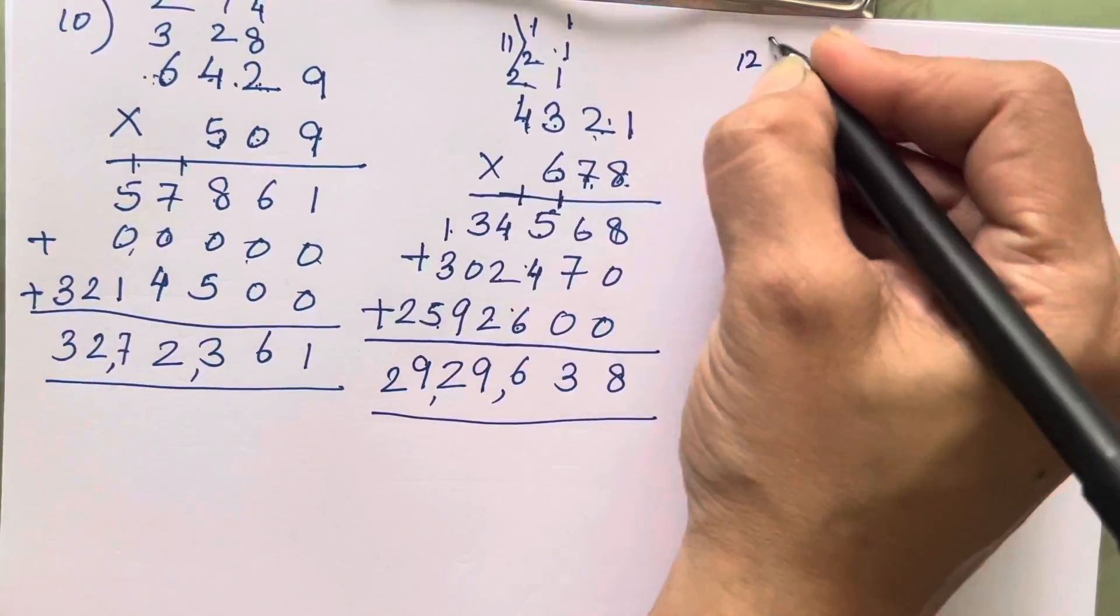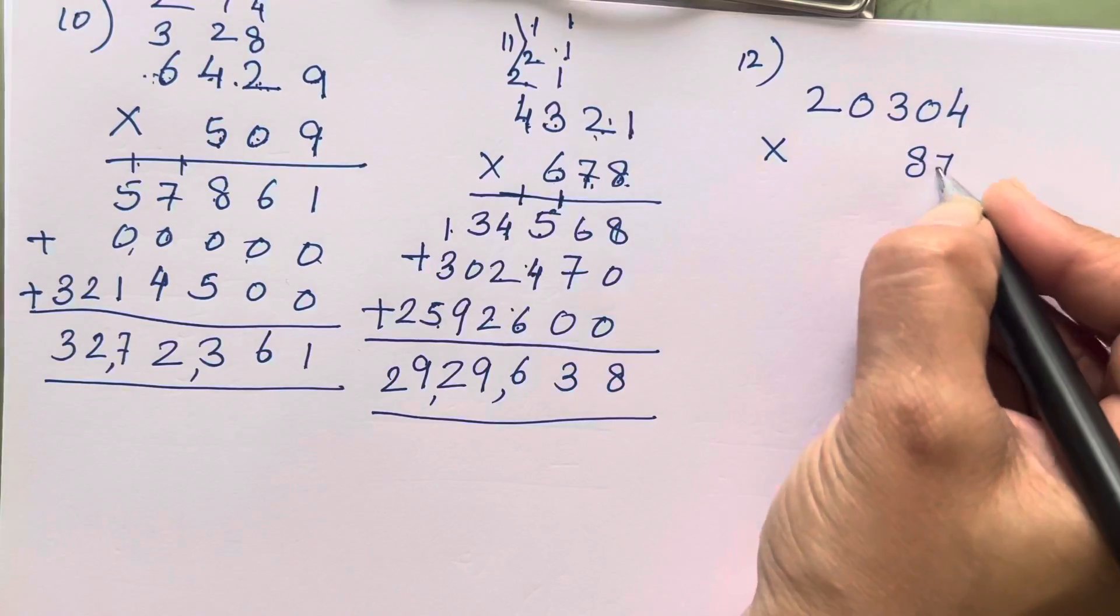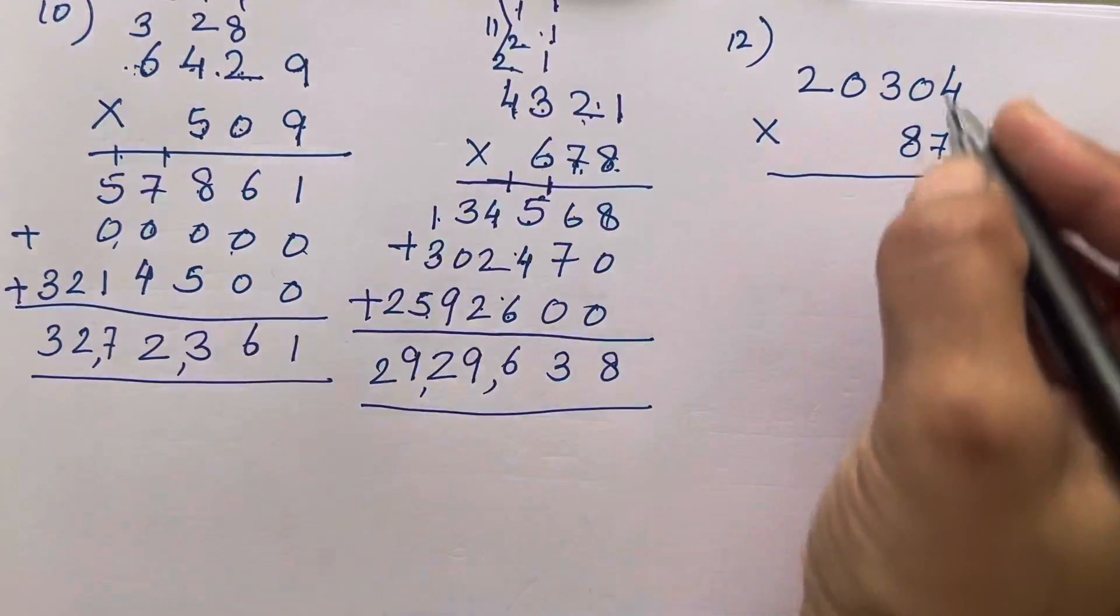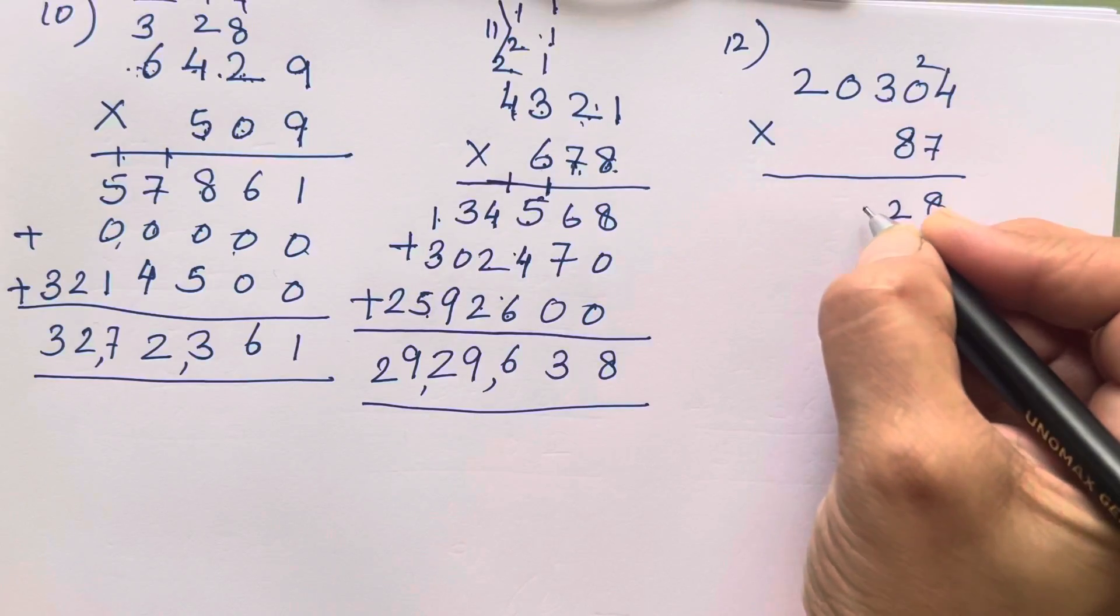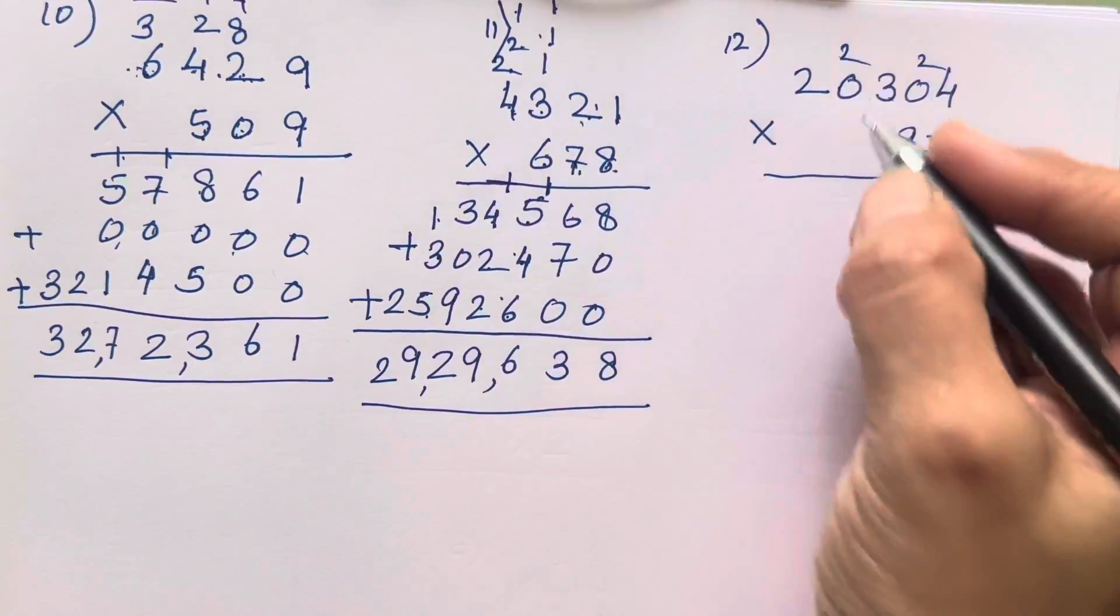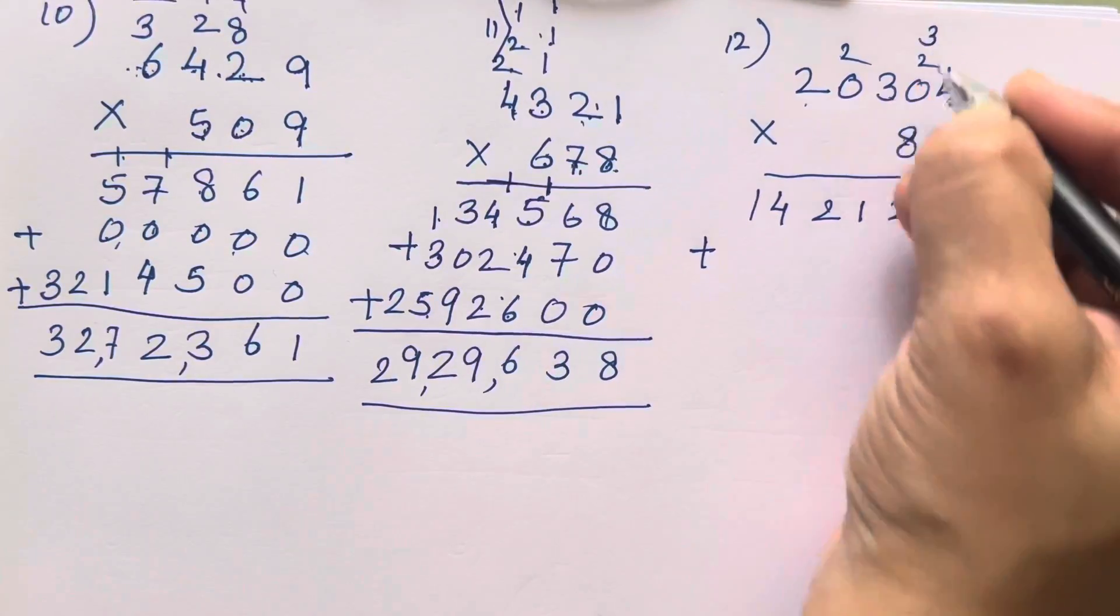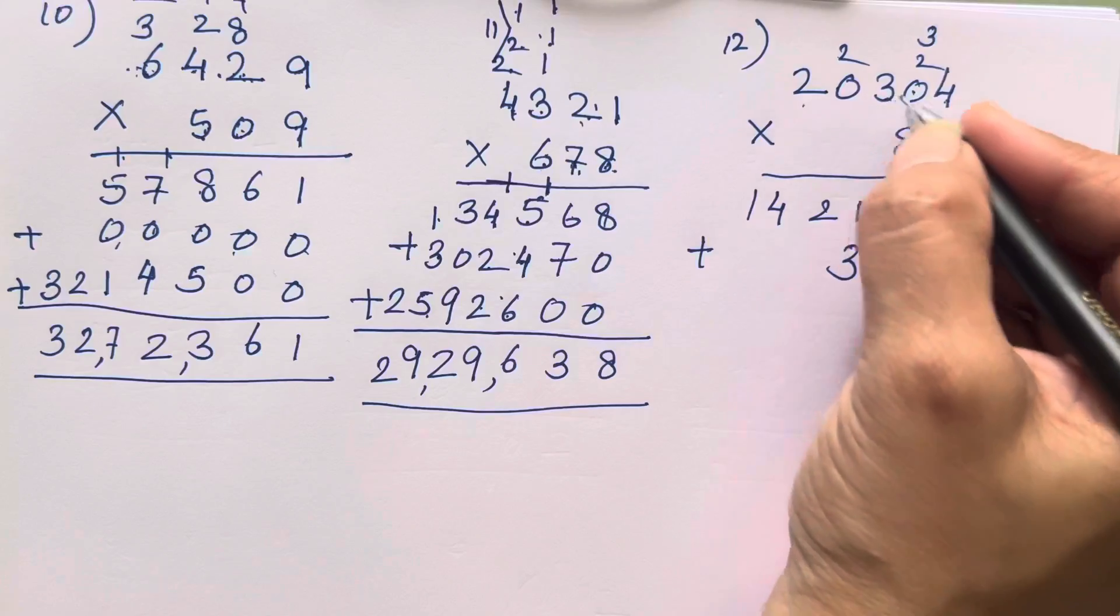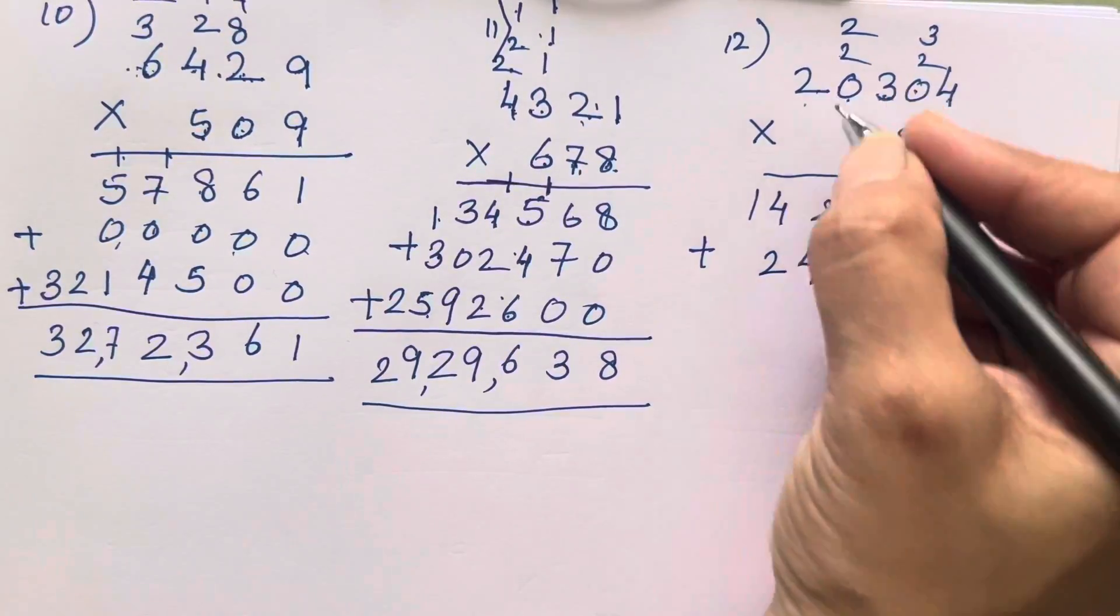Now let's solve the last sum that is 20304 into 87. In case while solving children if you all are finding anything difficult or if I have made any mistake do let me know in the comment section. 4 sevens are 28, 2 as it is, 7 threes are 21. 7 into 0, 0 so 2. 7 twos are 14. Plus 0, 8 fours are 32. 8 zeros are 0 and 2 as it is, 8 twos are 16.